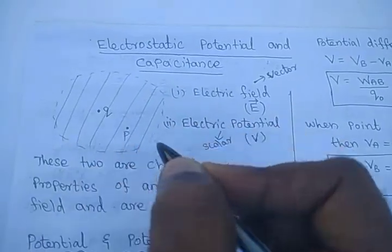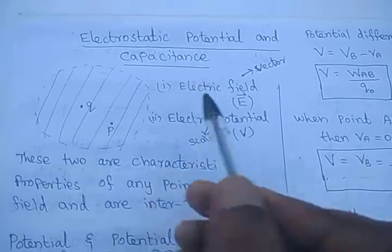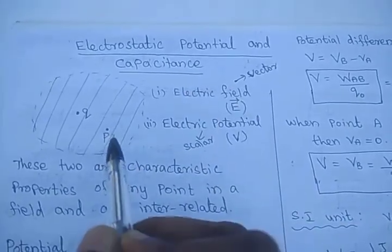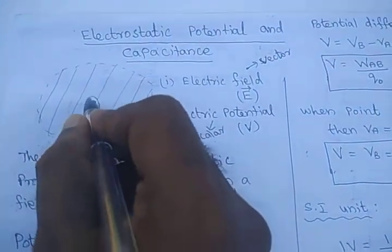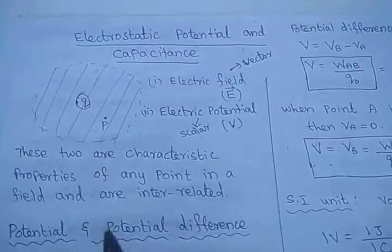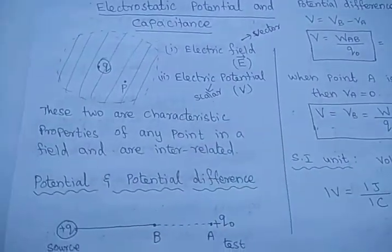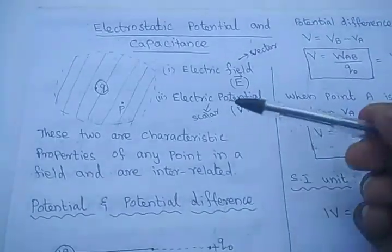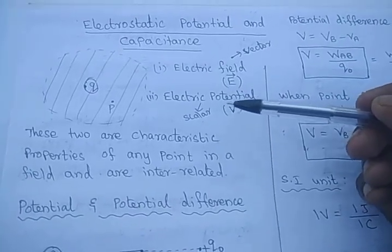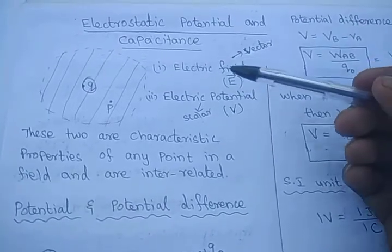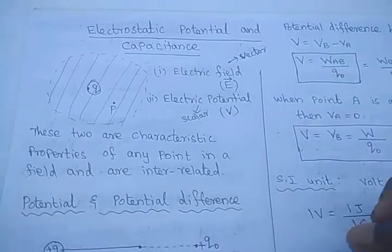Let us consider this is the point P. At this point, there will be an electric field as well as the electric potential of this point charge Q. These two are interrelated. We are going to see in detail about electric potential and its relation with the electric field in this session.